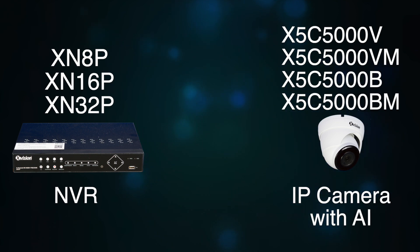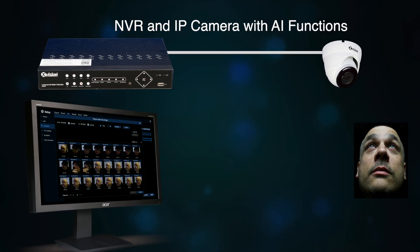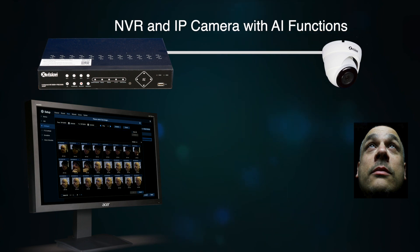Any camera model with the part code X5C has AI built in. The AI camera and the NVR recognise a human face in the picture, and the NVR then records the face image as a still and stores it in a database in the NVR.